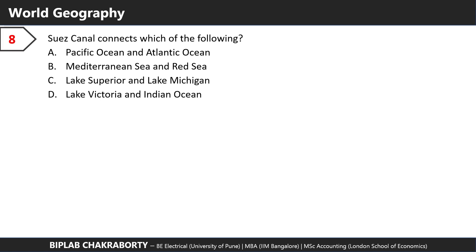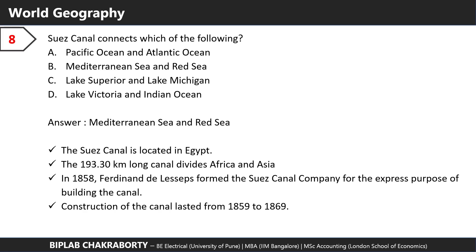The Suez Canal connects which of the following? The answer is the Mediterranean Sea and the Red Sea. The Suez Canal is located in Egypt. It's 193.3 kilometers long and it divides Asia from Africa. In 1858, Ferdinand de Lesseps formed the Suez Canal Company for the express purpose of building the canal. Construction lasted from 1859 to 1869.